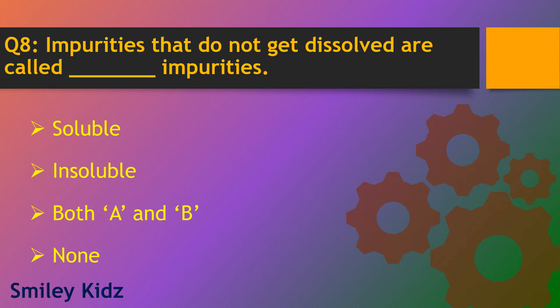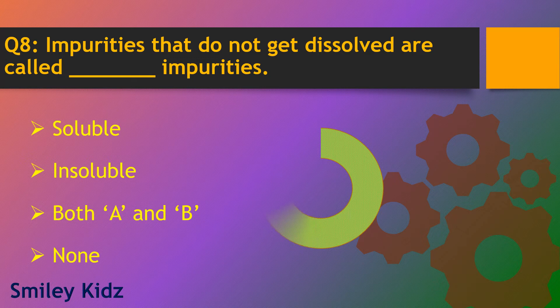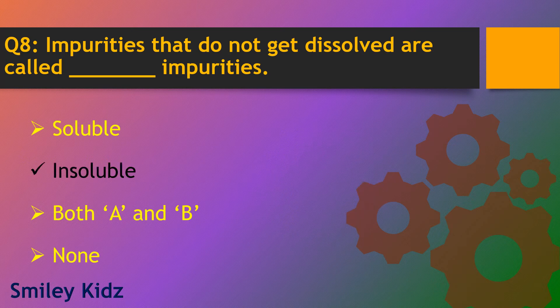Question number 8. Impurities that do not get dissolved are called what type of impurities? Options are soluble, insoluble, both A and B and none. The right answer is insoluble. Impurities that do not get dissolved are called insoluble impurities.